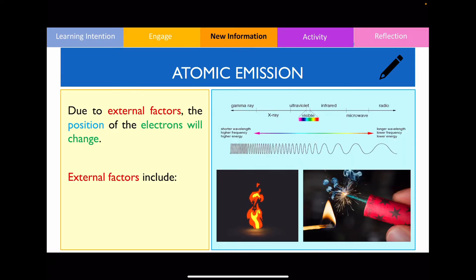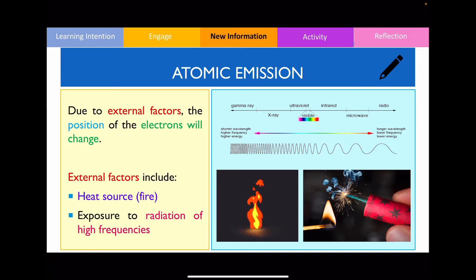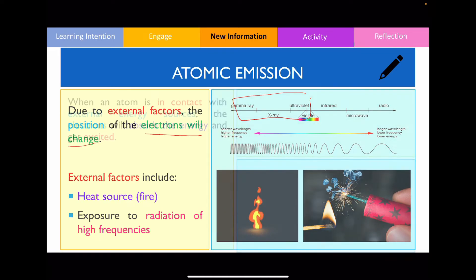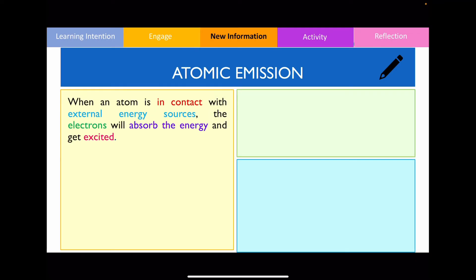However, if you have an external source like a flame source such as a Bunsen burner, or if you expose the atom to radiation of high frequencies such as UV, X-ray, or gamma rays, what happens is that the electrons found inside of an atom actually change position. When an atom is in contact with an external energy source such as a Bunsen burner or high energy radiation, these electrons will absorb the energy from the external source and they themselves get excited. When atoms are in this excited state, the electrons actually move positions within the atom.